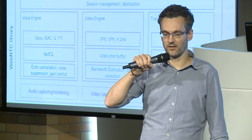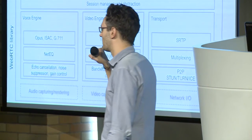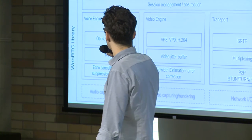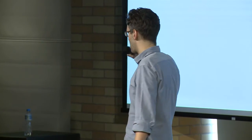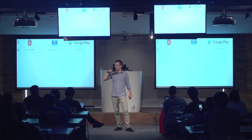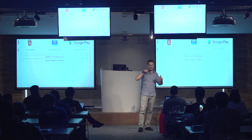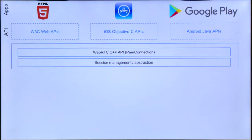Let's dig into WebRTC for those who might be newer to it. This is the overall architecture picture we've been living with for a couple of years. We have the Web APIs already covered today, but there are also mobile APIs provided by native libraries for iOS and Android — either Objective-C or Java bindings. Below those application-level APIs is the C++ peer connection, which is the main interface to the WebRTC library.